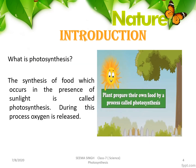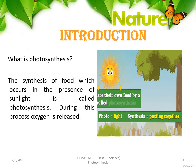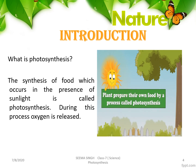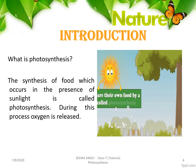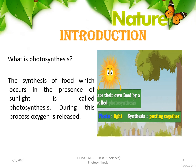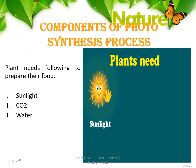Let's try to understand what is photosynthesis and how can we define it. The synthesis of food which occurs in the presence of sunlight is called photosynthesis, and during this process oxygen is released. In the term 'photosynthesis' we can see two words: photo and synthesis. Photo means light and synthesis means putting together — so putting together all the things in the presence of light is the process by which plants prepare their food.